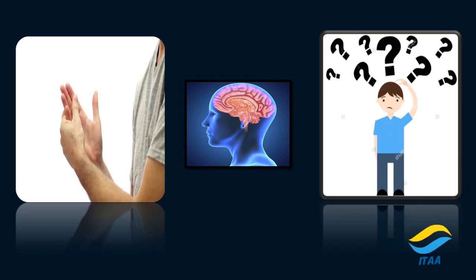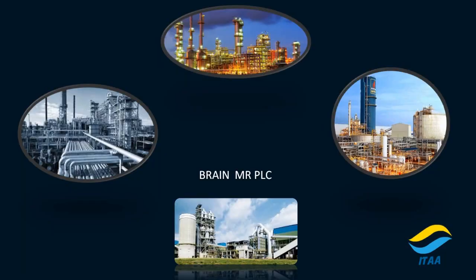Every process in the process industries is actually controlled by the PLC. What is the PLC doing? The PLC is just like a brain — it is getting all the signals from the field devices and deciding what to do based on those signals, just like the brain. For example, when you are touching the fire, the brain is giving signals to the hand to remove it.